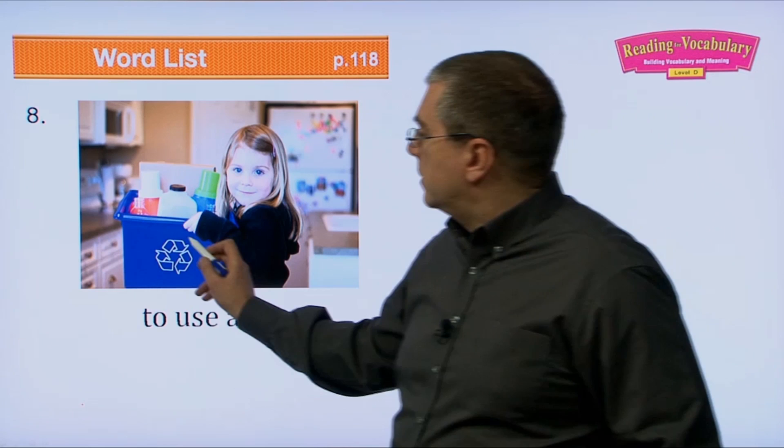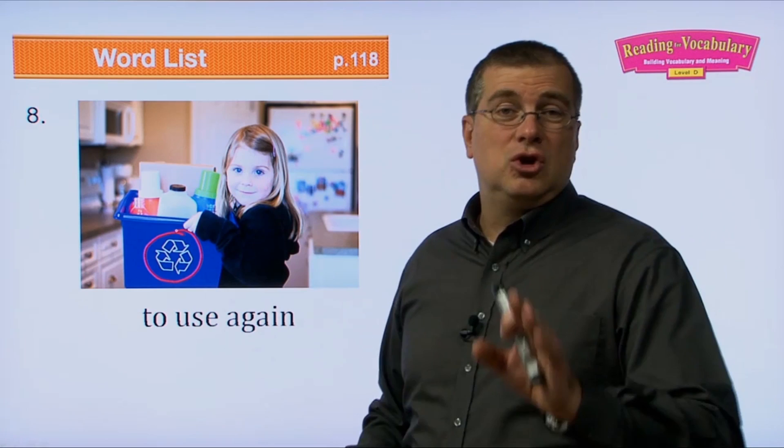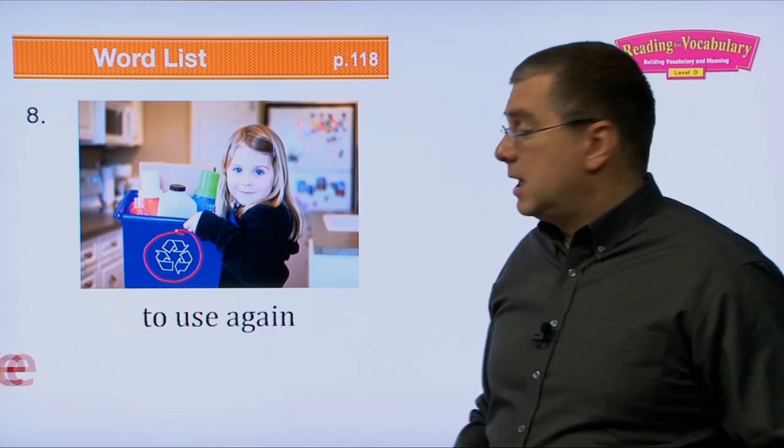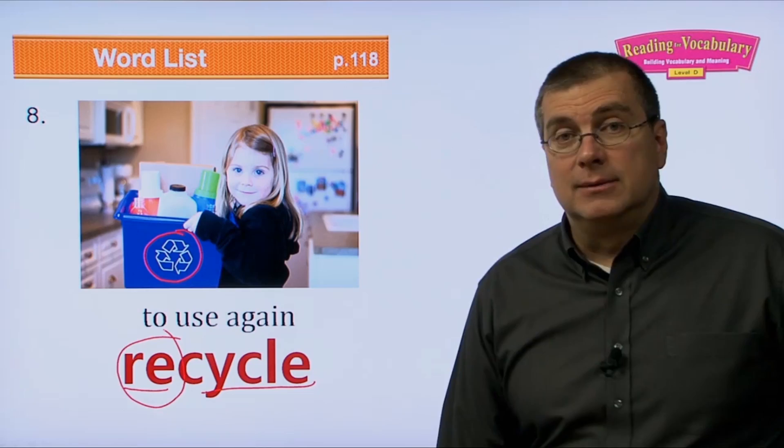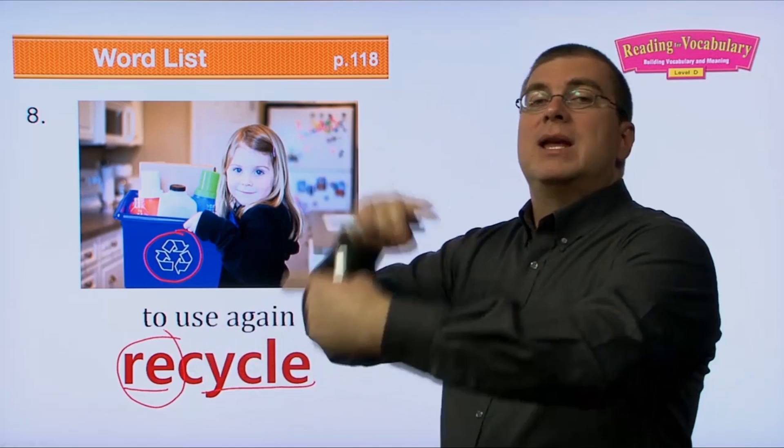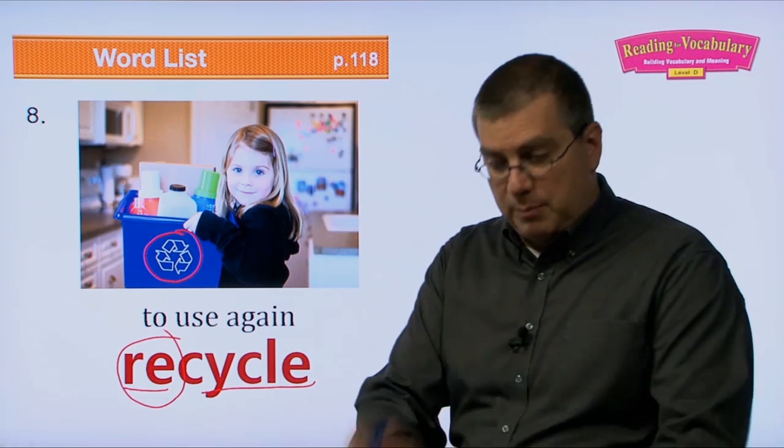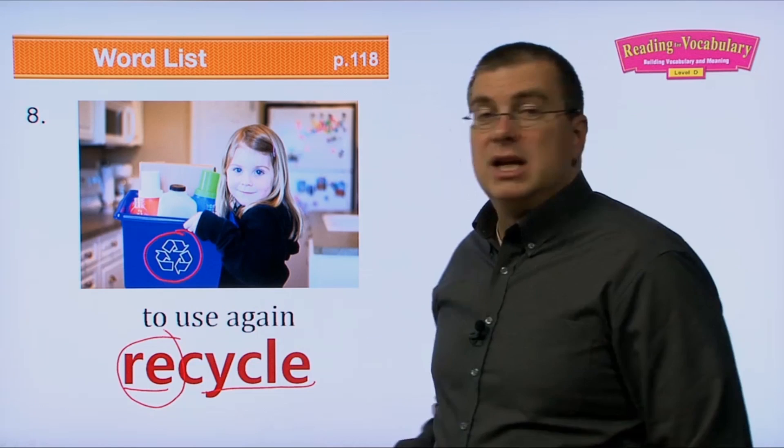Number eight: to use again — that's to recycle. We see the recycling symbol everywhere. If you're finished with a plastic bottle, you should use it again — you should recycle. 'Re' means again, and 'cycle' we know — it goes in a cycle. We use it again and again. Separate your plastic, paper, metal, and other garbage, and recycle it so we can use it again.